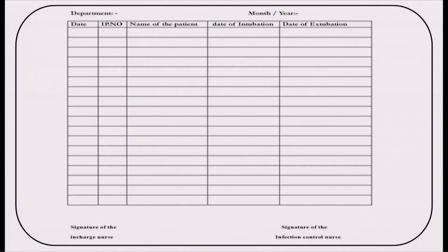The re-intubation checklist records patient details, date of intubation, and date of extubation. The date of re-intubation within 48 hours of extubation must be brought to the notice of the infection control department and management, so that any gaps in understanding or implementing extubation criteria can be corrected immediately. This is how prevention is maintained across all hospital-acquired infections.